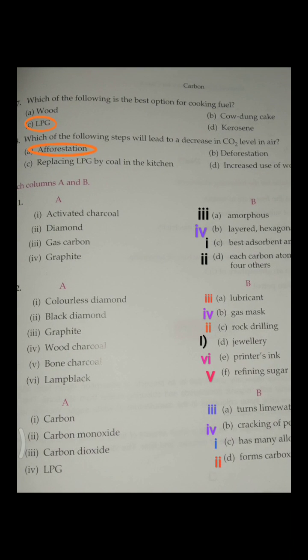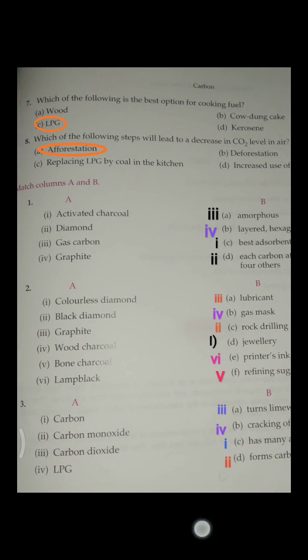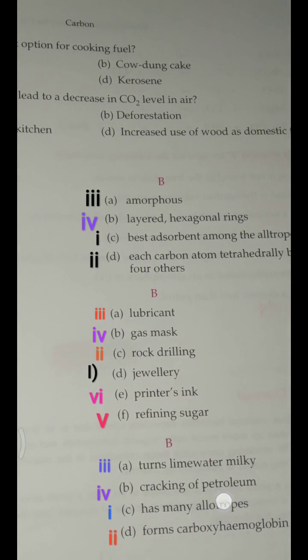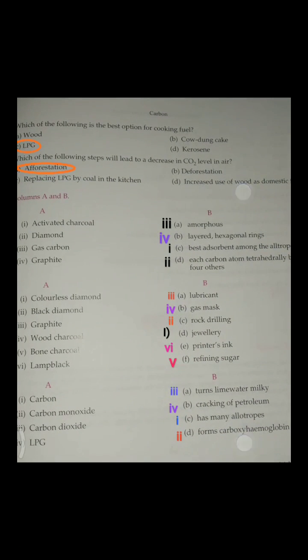Eighth, which of the following steps will lead to a decrease in carbon dioxide level in air? Afforestation. Match ups. First, activated charcoal - best adsorbent among the allotropes. Second, diamond - each carbon atom tetrahedrally bonded to four others. Gas carbon - amorphous. Graphite - layered hexagonal rings.